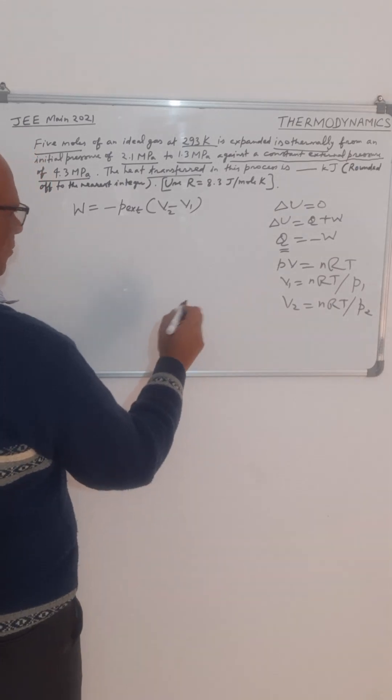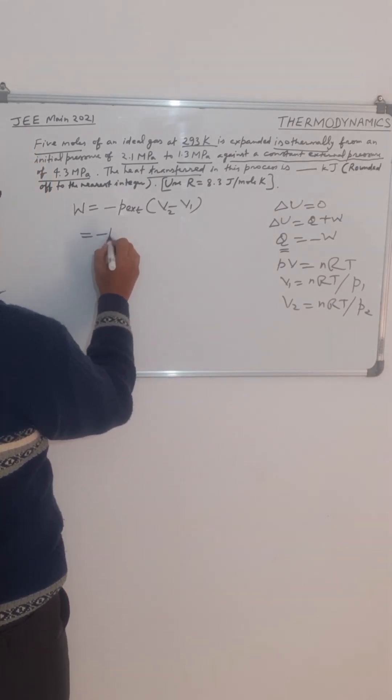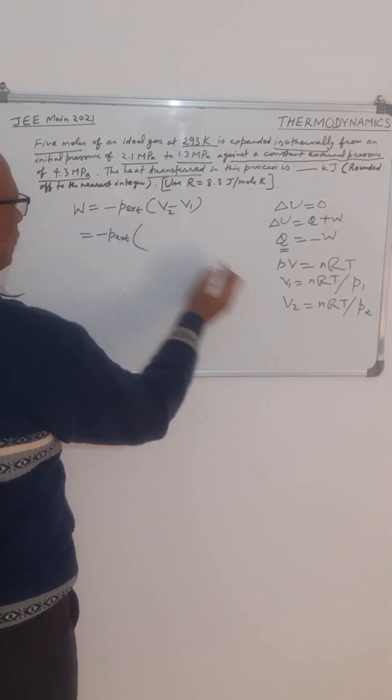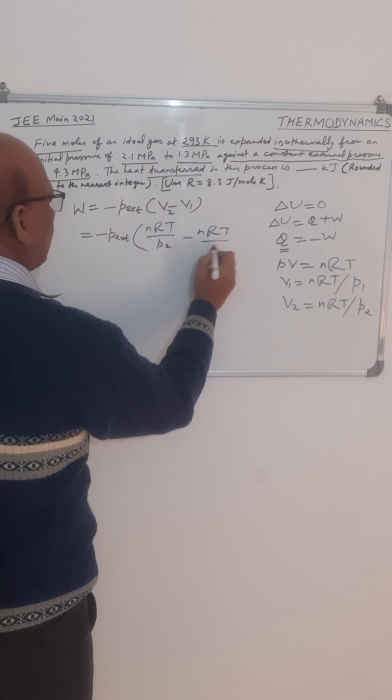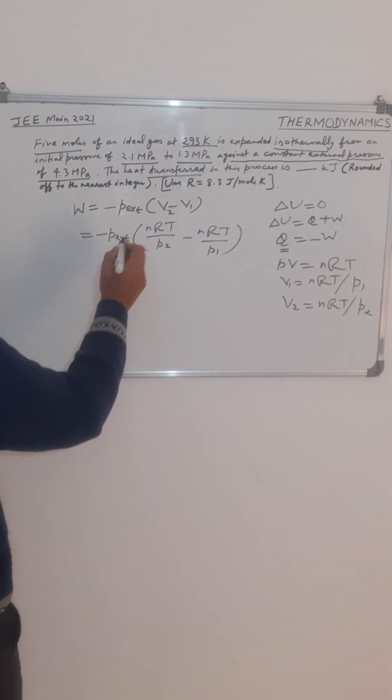So this formula becomes minus P external into, in place of V2, we will write NRT upon P2 minus NRT upon P1. Now we will put the values.